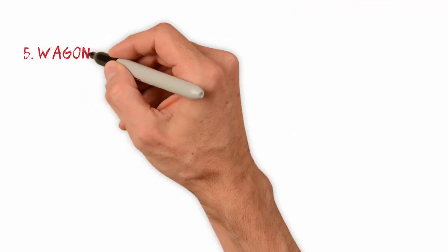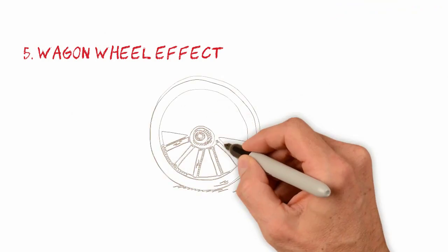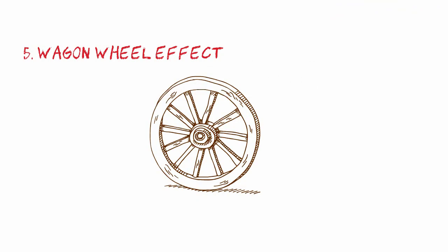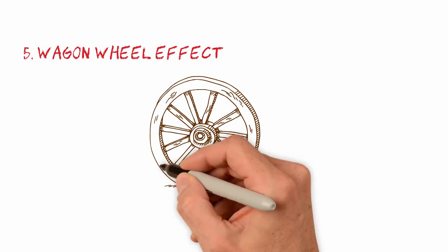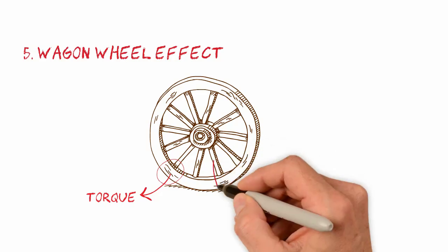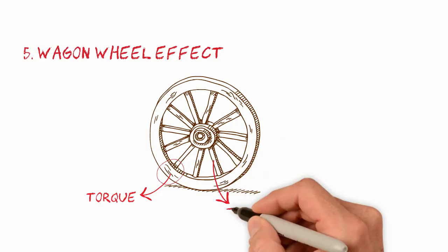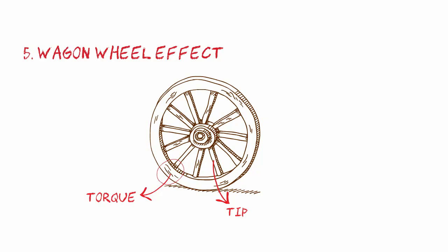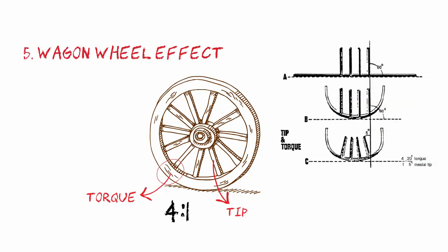The last analogy of this video is the wagon wheel effect — an important effect for those working with rectangular archwires. Independently of the prescription of the brackets used, the effect described by Andrews represents the relationship between the torque applied by the archwire and the tip or angulation of the teeth. When an orthodontist adds torque to the anterior segments of the archwire, he automatically adds a mesial tip to the root's teeth in a ratio of 4 to 1.